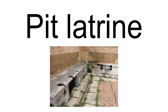Other types of pit latrines may include the odorless earth closet, the arborloos or tree bog, very simple types of composting toilet, or the twin pit pour flush pit latrine, popularized by Sulabh International. The shelter that covers such a pit latrine is known in some varieties of English as an outhouse.